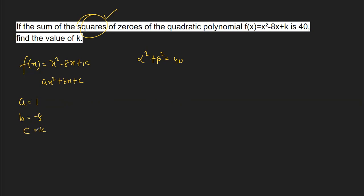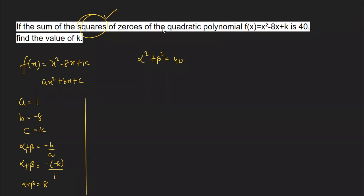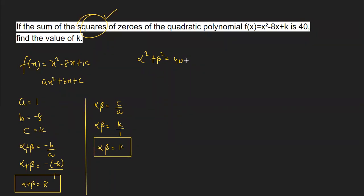We have a = 1, b = -8, c = k. The formula for sum of zeros is α + β = -b/a = -(-8)/1 = 8. The formula for product of zeros is α × β = c/a = k/1 = k. We have calculated both α + β = 8 and α × β = k, and we will use these values ahead. We need to find k, and the given condition is α² + β² = 40.